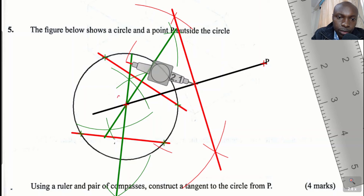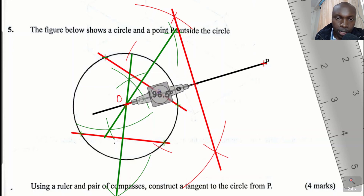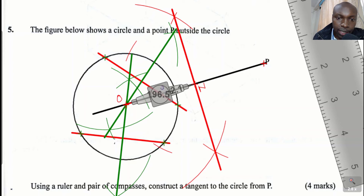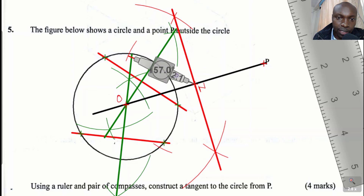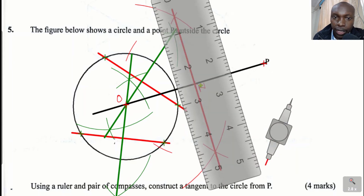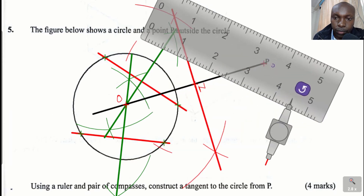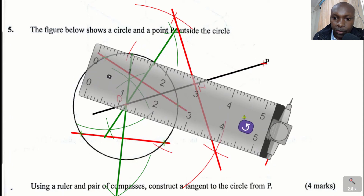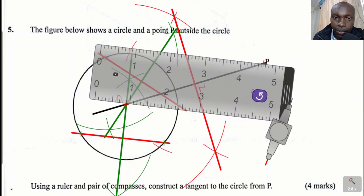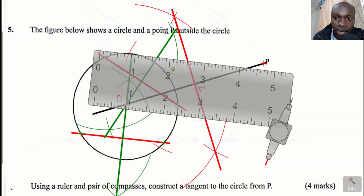The center of the circle is O. The midpoint of OP I will name N. So the radius we're working with is ON. Standing at N with radius ON, mark two arcs on the circumference of the circle — one arc above and another arc below. After doing that, get your ruler and draw the tangent. Join point P to the point where you made one arc and then to the point where you made the other arc.